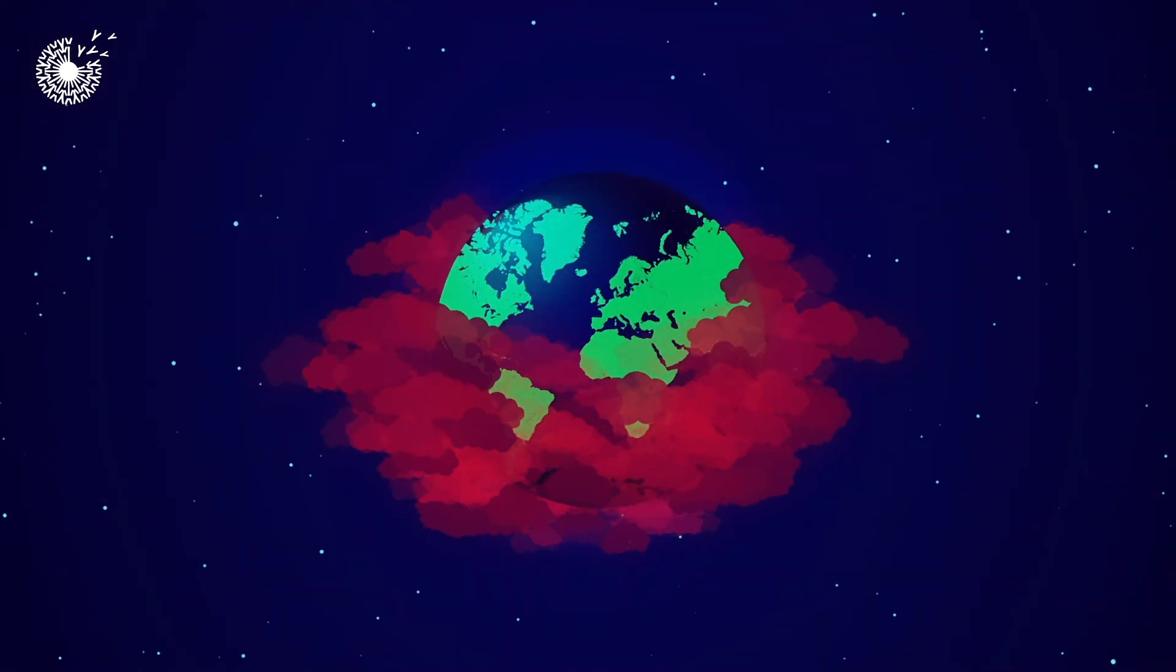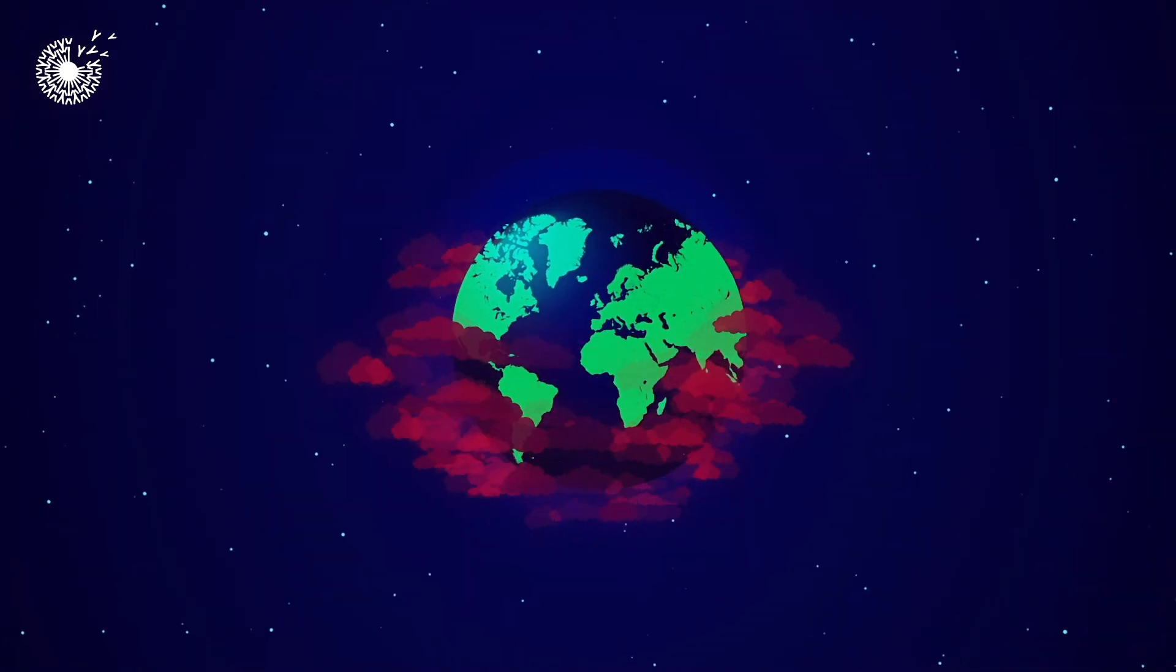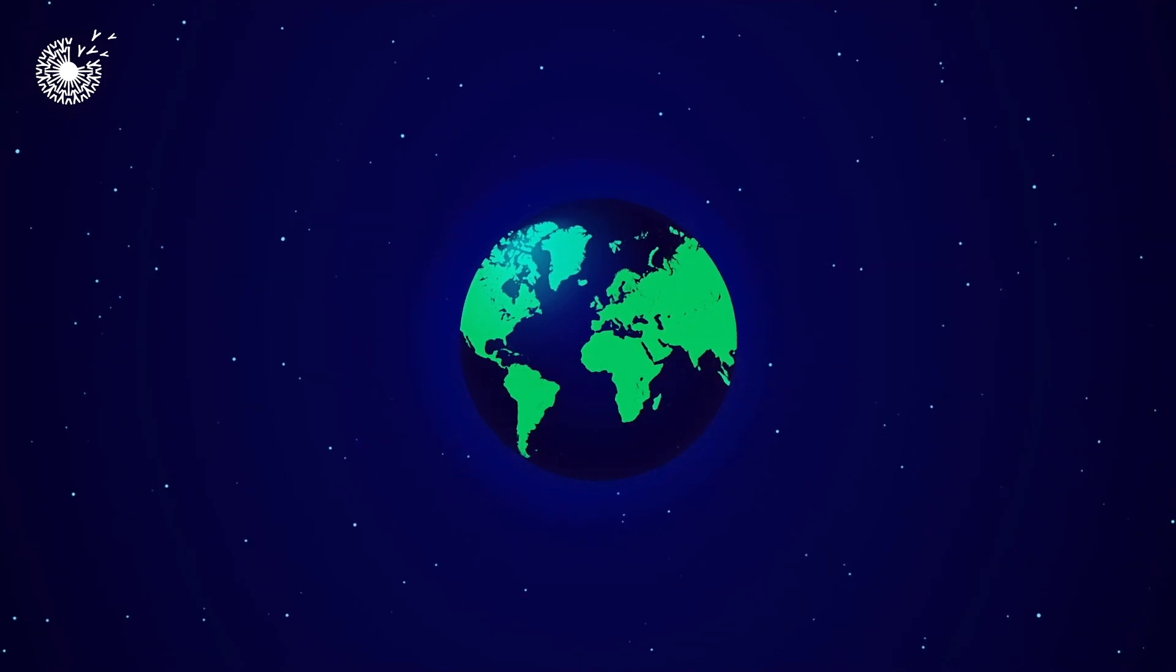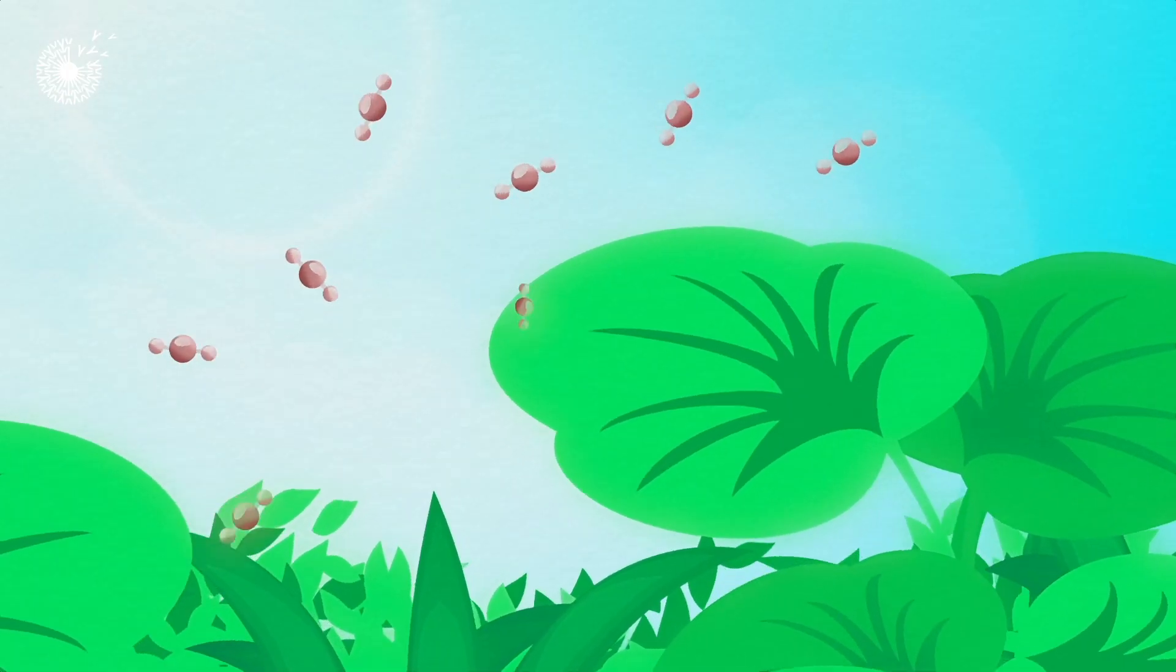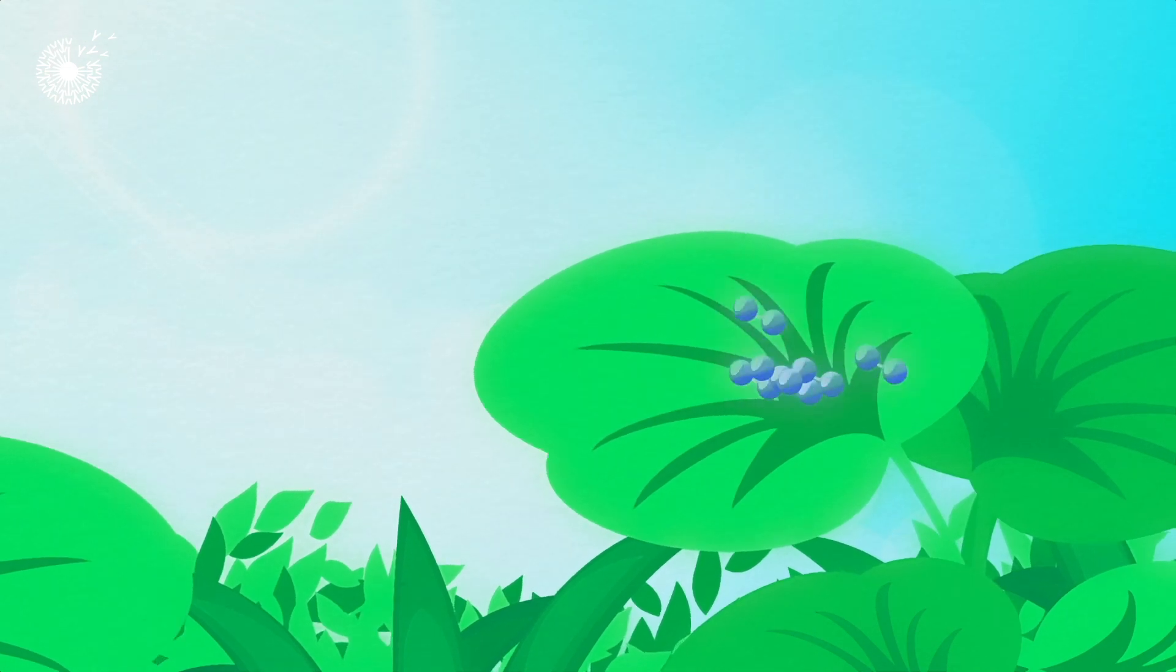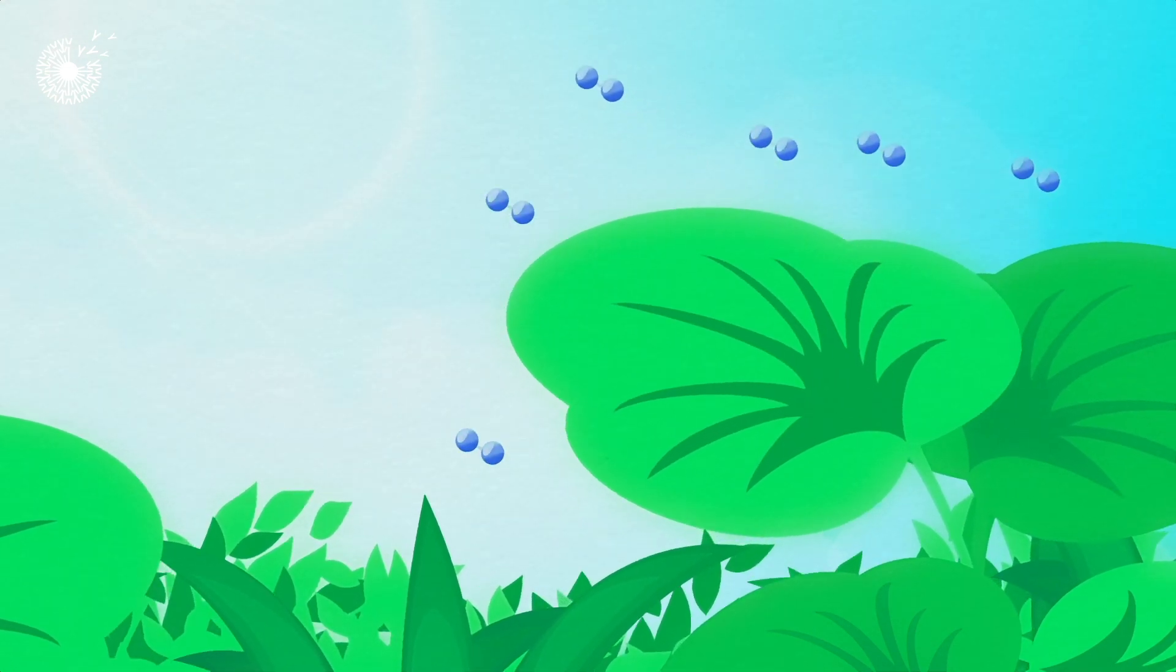But our planet, and particularly the green parts of it, has an amazing way of handling this greenhouse gas. Plants are constantly taking in carbon dioxide and sending out oxygen during photosynthesis.